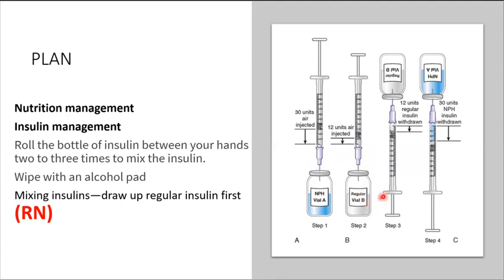Once we are done with that, the next step would be to turn the bottle and the syringe upside down and withdraw the required number of units of insulin. Again, we said you want to start with your regular insulin first, which is clear. So you want to withdraw the clear insulin first, after which you withdraw the cloudy insulin.